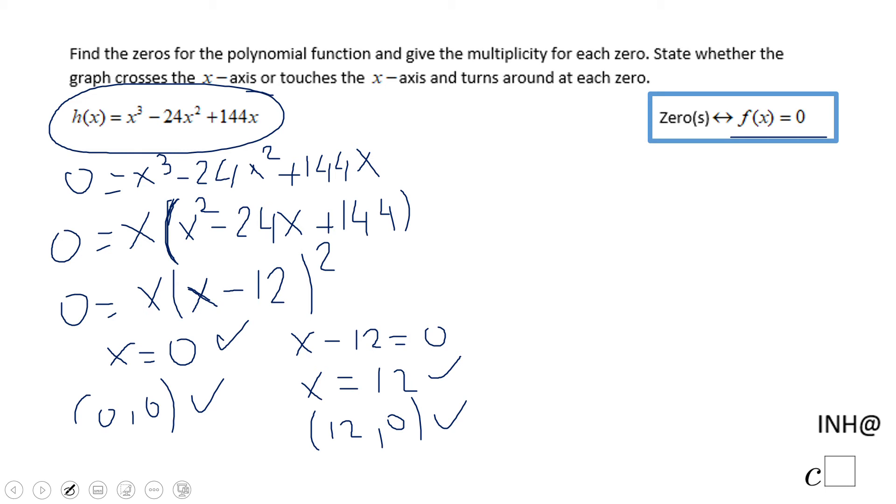Next, we need to find the multiplicity. Since the factor x has an exponent of 1, it has multiplicity of 1. Since the factor (x - 12) has an exponent of 2, it has multiplicity of 2. So x = 0 is a zero with multiplicity 1, and x = 12 is a zero with multiplicity 2. Now we can go to the last part: